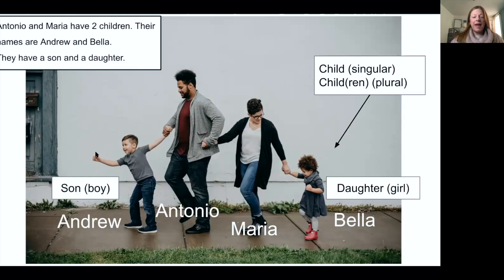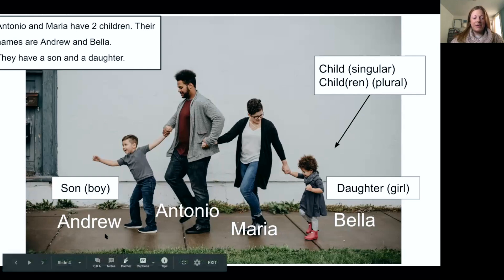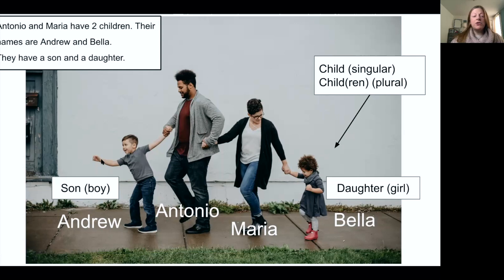Here we have Andrew and Bella — they are the children. One child is singular: child. Two children is the plural form. Notice there is no S — it's children, not childrens.